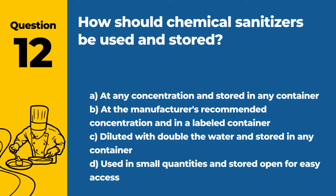Question 12. How should chemical sanitizers be used and stored? a. At any concentration and stored in any container. b. At the manufacturer's recommended concentration and in a labeled container. c. Diluted with double the water and stored in any container. d. Used in small quantities and stored open for easy access. Answer b. At the manufacturer's recommended concentration and in a labeled container. Chemical sanitizers should be used at the concentration recommended by the manufacturer and stored in a properly labeled container.